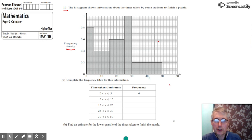So in order to get the frequency for each bar of this, what we do is we multiply the class width by the frequency density. So the frequency is given by the class width multiplied by the frequency density.